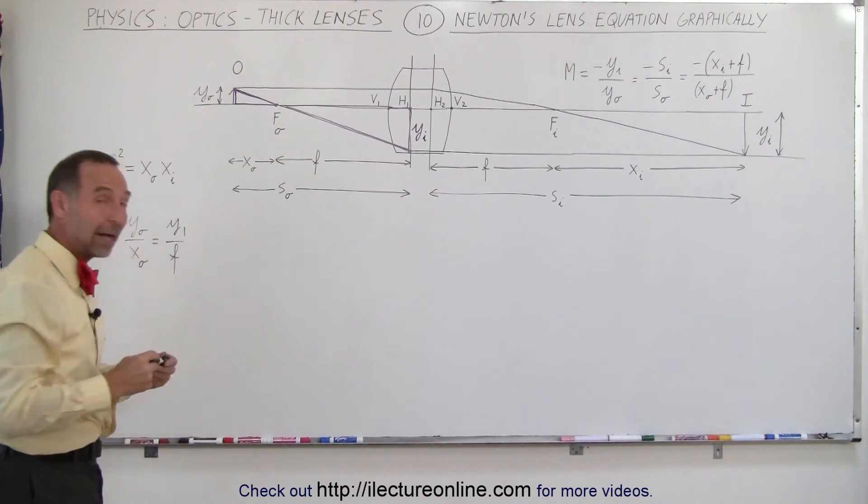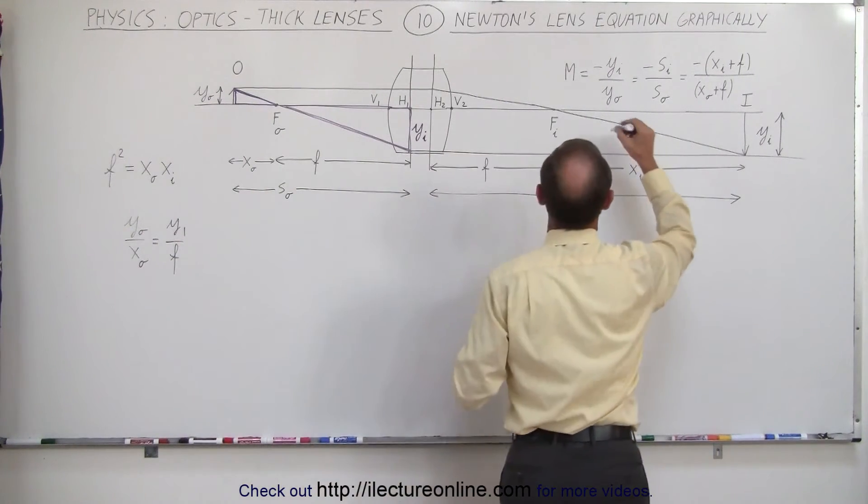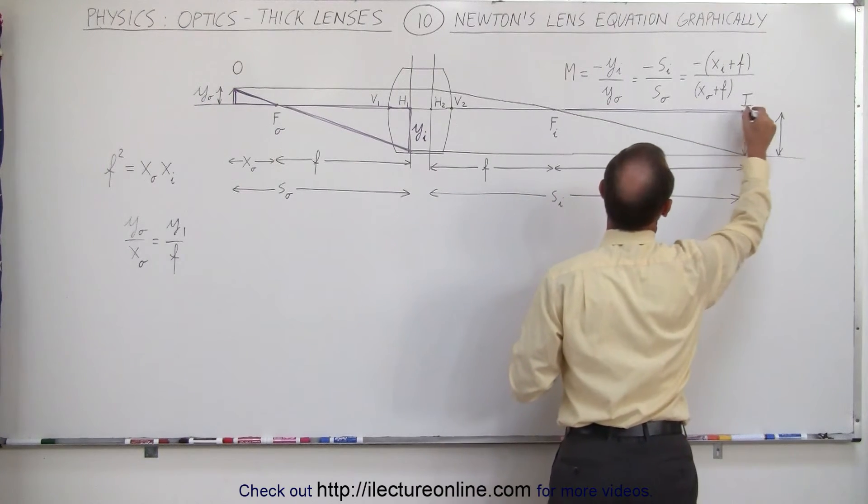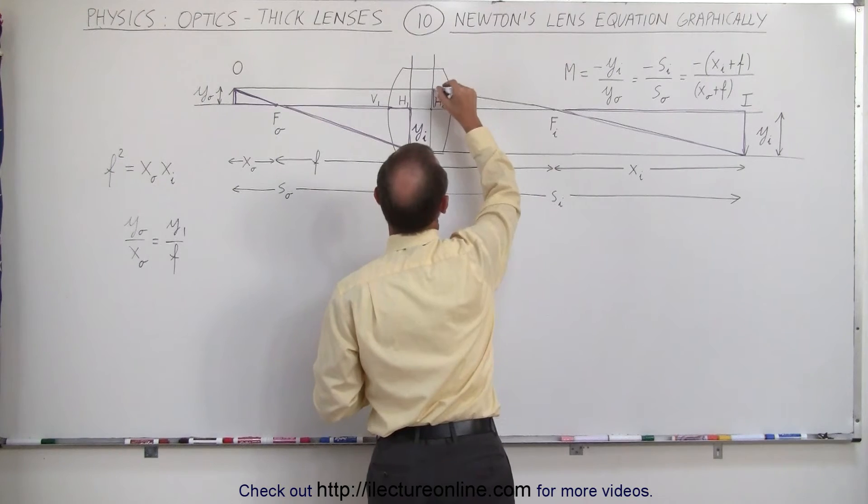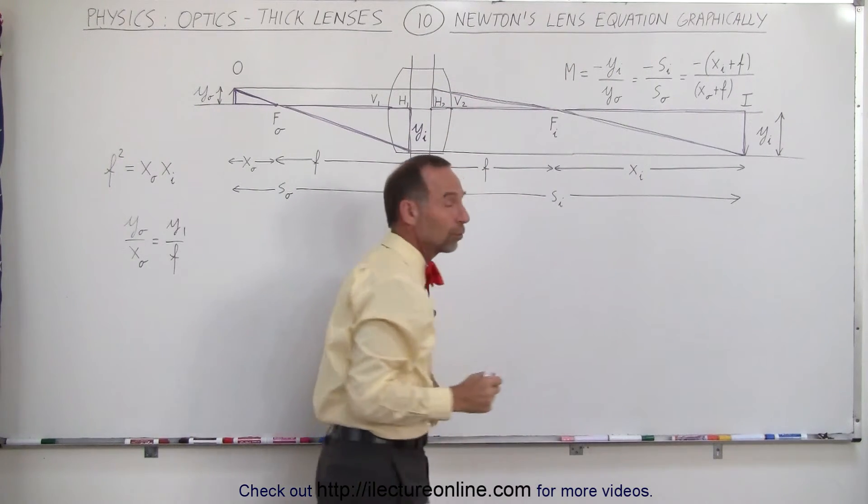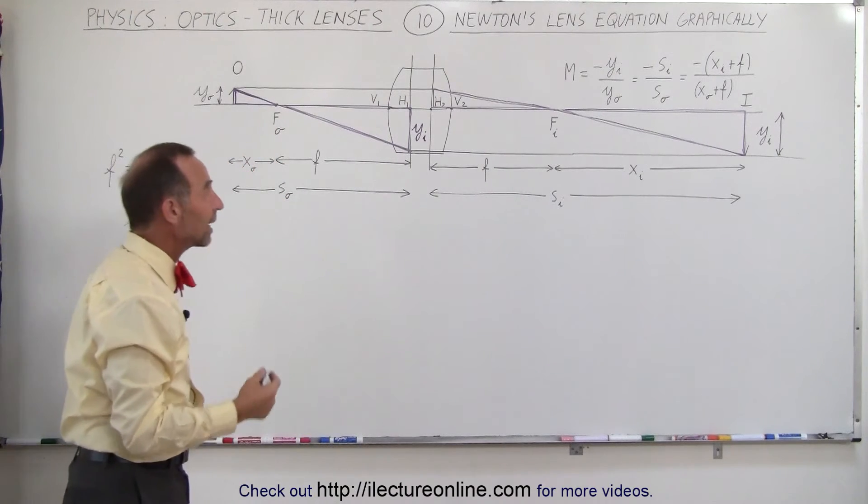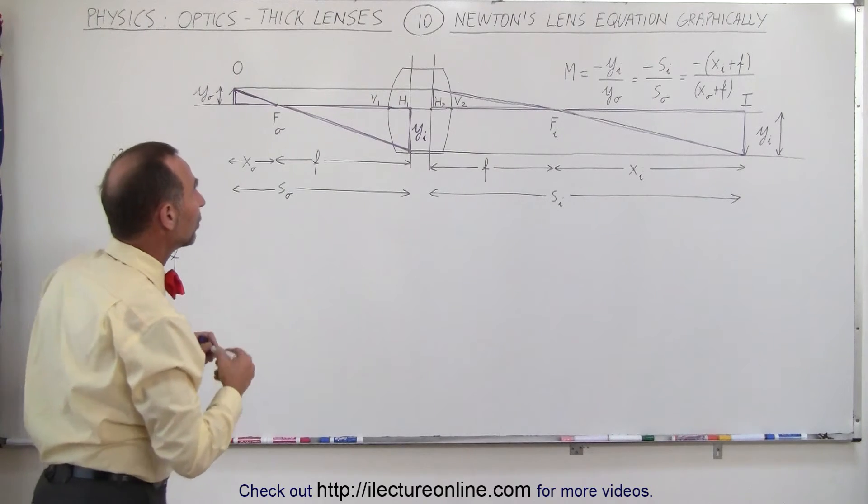Okay, now we can go to the other side of the lens and do the same thing. Notice that this triangle right here and this triangle right here, those two must also be similar triangles. In other words, the ratios of the angles and the size must be the same.